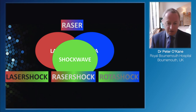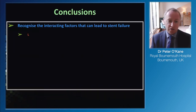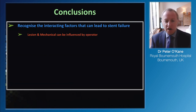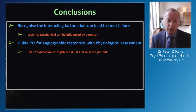That's the final case. Moving to the conclusion slides: we've gone through the interacting factors - lesion and mechanical factors can be influenced by the operator, and those are the ones we can focus on to minimise the risk of stent failure. Hopefully you've seen that pressure wire is a very good tool.